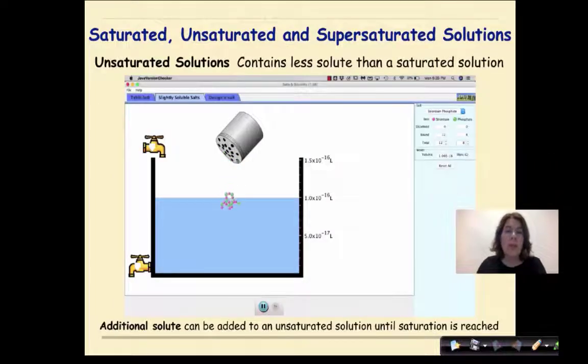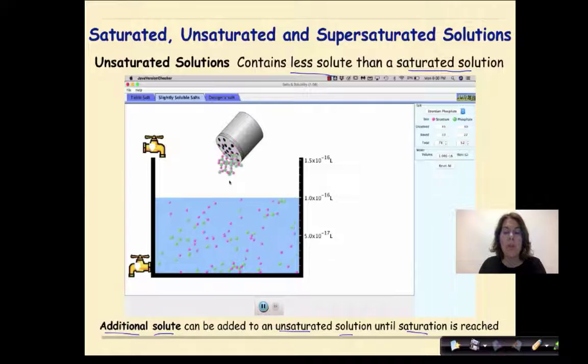Unsaturated solutions contain less solute than a saturated solution. So from this PhET simulation that you can see below, we're adding strontium phosphate in different shakes. And as we add it in, this ionic compound is separating automatically into strontium ions and phosphate ions. Additional solute can be added to an unsaturated solution until saturation is reached. And we see it right here.